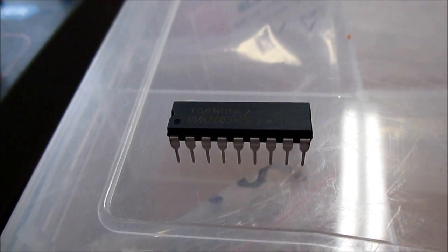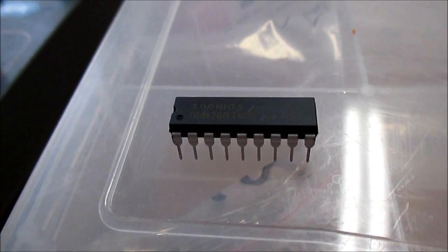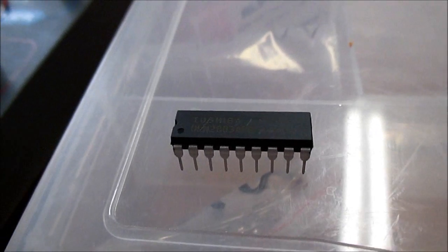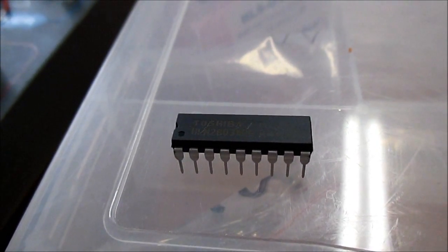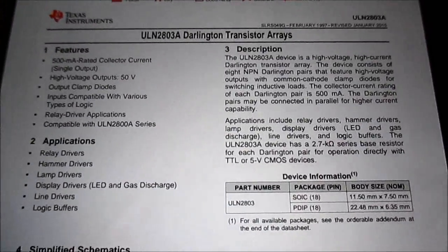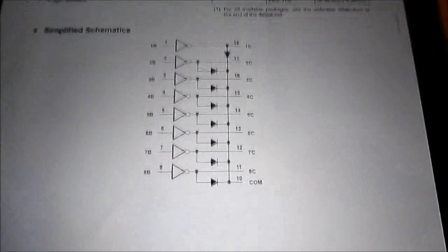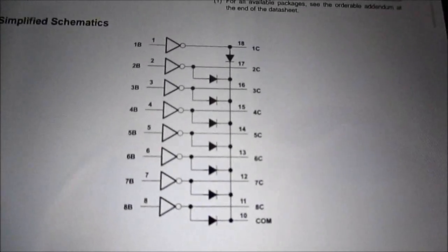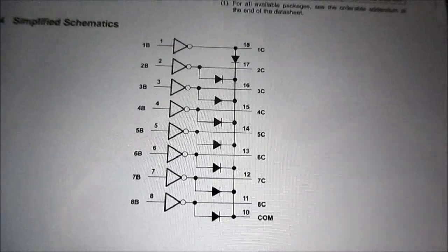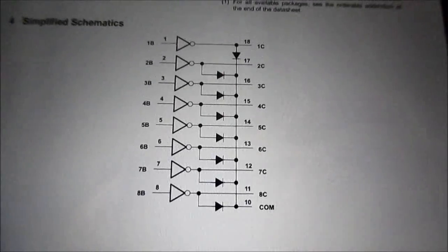And they're not that expensive. On DigiKey, I see they want 72 cents each. So yeah, it's a pretty inexpensive solution. Okay, let's take a look at the datasheet. Here is the datasheet. That's the output showing the clamp diodes. They show as inverting buffers, and I'll explain that in a minute.